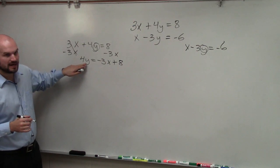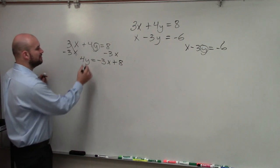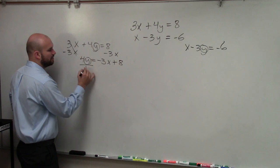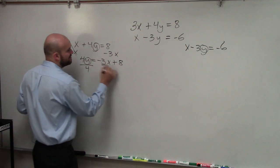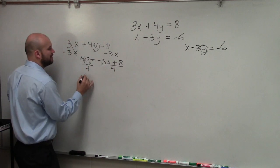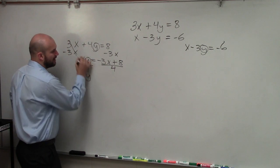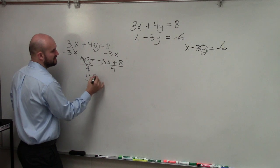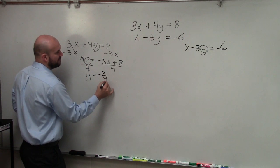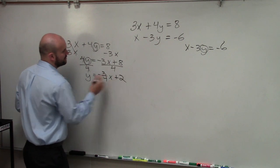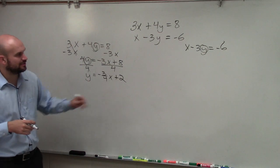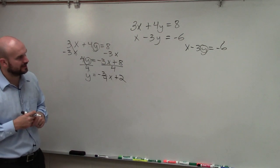Now I see that my variable is being multiplied by 4. So to undo multiplying by 4, I divide by 4. Therefore, I'm left with y equals negative three-fourths x plus 2. And I'll get to graphing that in just a second.